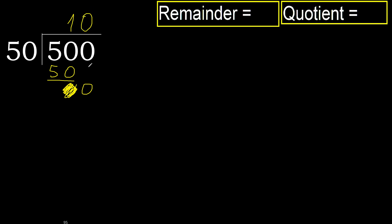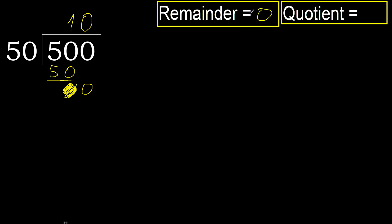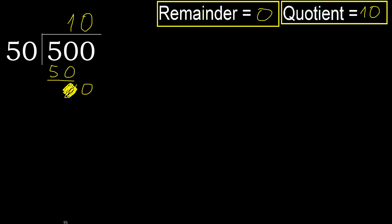Complete because here, finish it with this number. Therefore, 500 divided by 50 is 10.